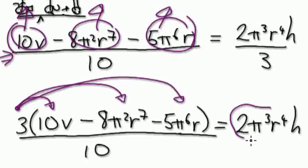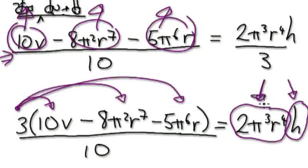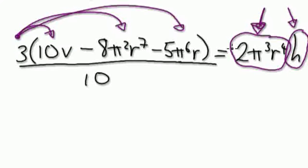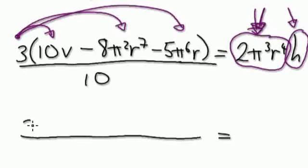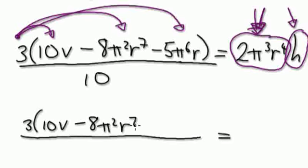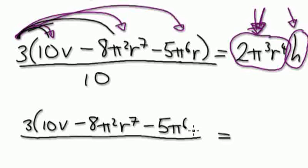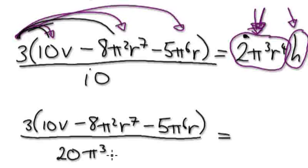Now visualize this as this bubble multiplying this bubble. You want to get h on its own, so kill off this one — divide both sides by this bubble here. If you divide both sides by this bubble, it's going to get multiplied to the bottom. The top will remain the same: V minus 8 pi squared — you could multiply out the brackets, but I'm going to leave it as it is — so 5 pi to the power of 6, r, close the bracket. This gets multiplied to the bottom — get the 10, merge it with the 2 here, so it would be 20 pi to the power of 3, r to the power of 4.